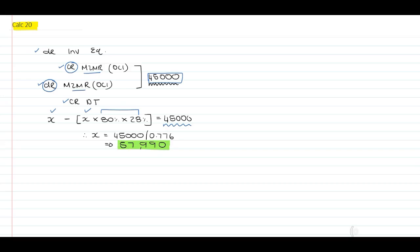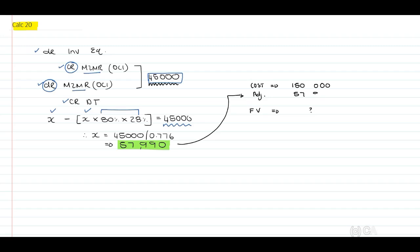Now, you will remember that they've indicated the cost price of this asset sold is $150,000. They've sold the asset at fair value, which we don't have, but we are able to determine what the fair value adjustments were in prior years due to the movement from our mark-to-market reserve to retained earnings. And this is the $57,990. Therefore, the selling price will be $207,990.